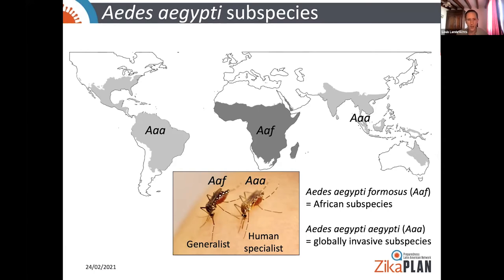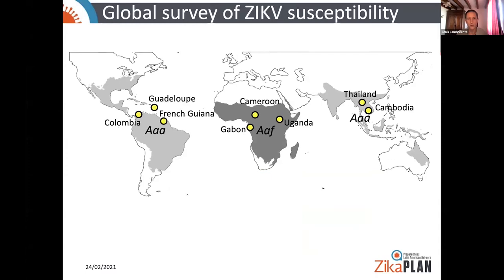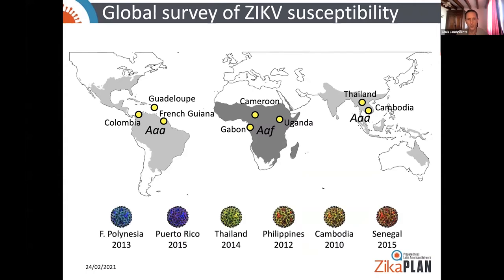To experimentally test whether the two subspecies of Aedes aegypti may have different abilities to transmit Zika virus, we sampled populations representative of the two subspecies around the world: three populations from the Americas, three from Africa, and two from Southeast Asia. We then exposed these mosquitoes to a panel of six Zika virus strains representative of the currently circulating viral genetic diversity.